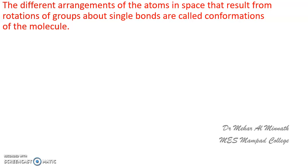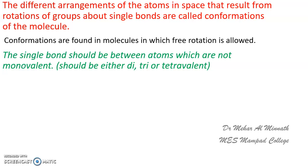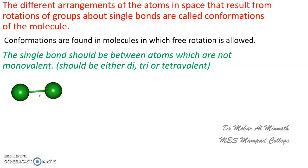Conformations are possible wherever free rotation is allowed, but you must take care that the atoms across the single bond which is being rotated must not be monovalent. The atoms must be either divalent, trivalent, or tetravalent. If the atoms are monovalent, you will not get any conformations. For example, a chlorine–chlorine single bond is free to rotate, but when it rotates you don't get different arrangements because the atom is spherical — you get the same molecule.